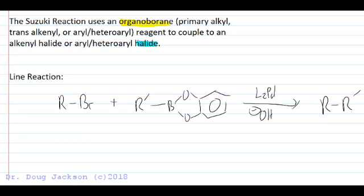Let's talk about Suzuki Coupling. In Suzuki Coupling, we're going to use an organoborane reagent, such as the form we see here, to couple this carbon group that we've got attached to the organoborane to another carbon group that's going to come from a halide of some sort. Let's talk about the limitations on each one of these reagents for the Suzuki, and there aren't that many.